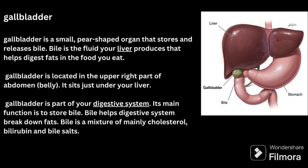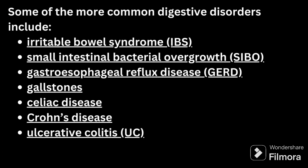The gallbladder is a small pear-shaped organ that stores and releases bile. Bile is a fluid the liver produces that helps digestion of fats in food. The gallbladder is located in the upper part of the abdomen, just under the liver, and is part of the digestive system. Its main function is to store bile. Bile is a mixture of mainly cholesterol, bilirubin, and bile salts.